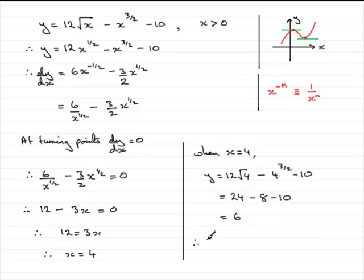Therefore, the turning point is going to be 4, 6. The x coordinate of 4, the y coordinate then of 6. Well that brings us to the end of this part of the question.